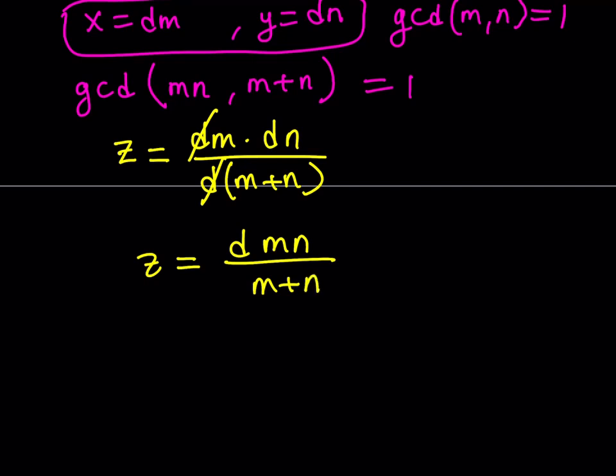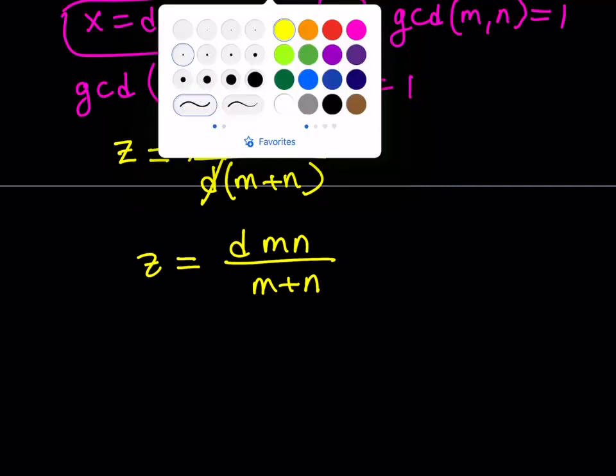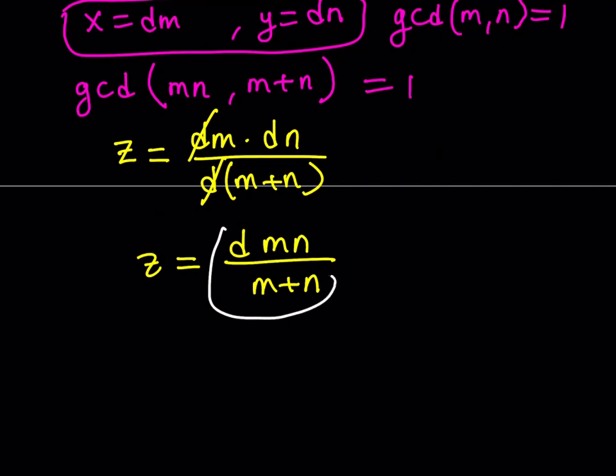I'm going to write it as dmn divided by m plus n. Now, think about this. m plus n and mn are relatively prime. So there is no way m plus n is going to divide mn. But z is an integer. Therefore, dmn divided by m plus n needs to be an integer, which means that d has to be divisible by m plus n. Does that make sense? Otherwise, we're not going to get an integer from here. Therefore, we can safely say that m plus n divides d.